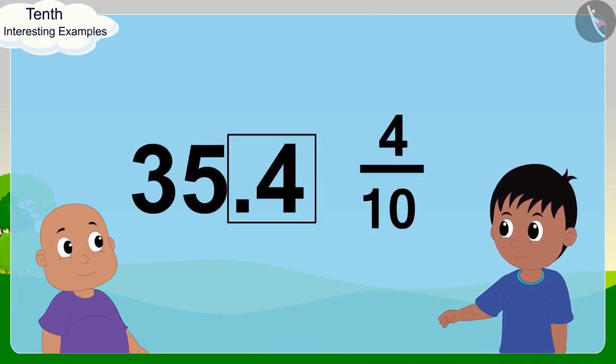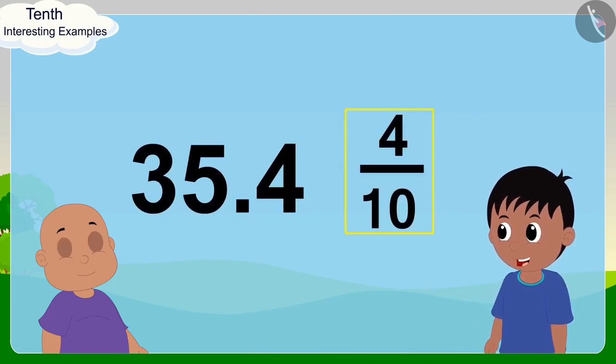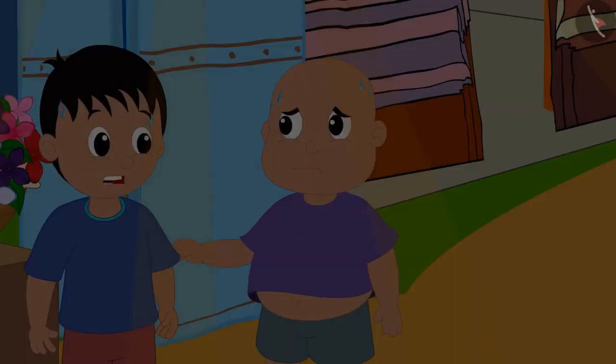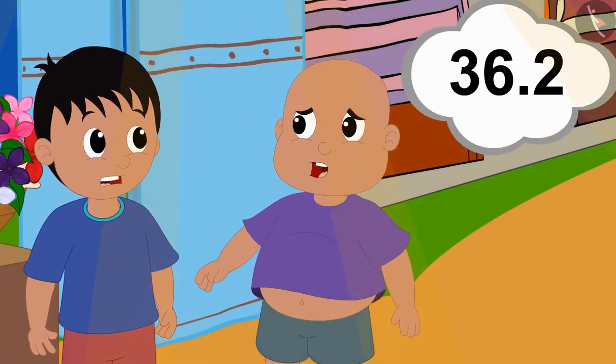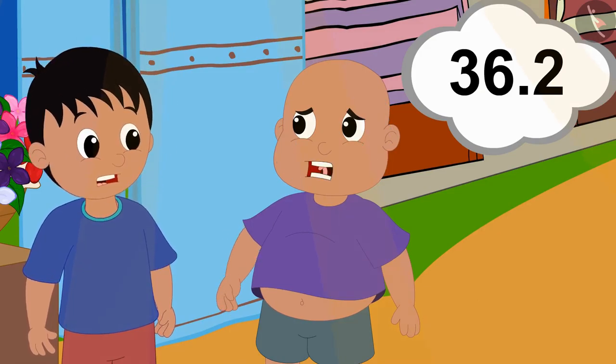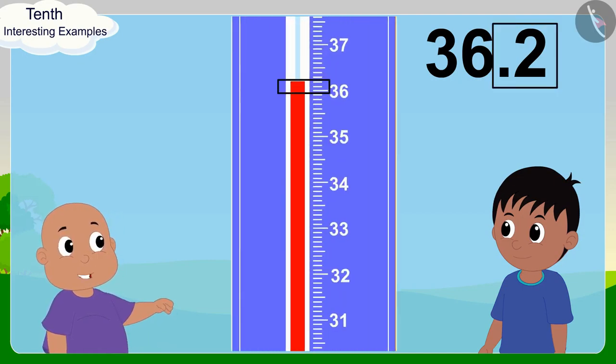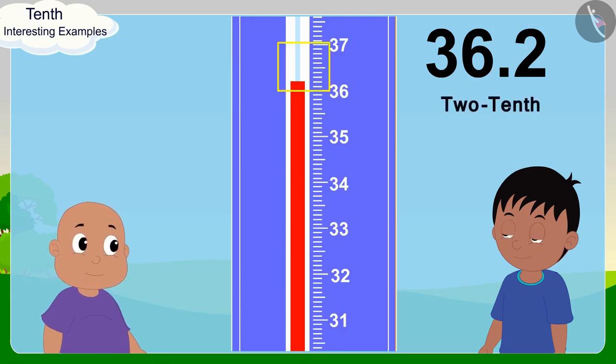'Well, if tomorrow's temperature is 36.2 degrees Celsius, then we can say that 0.2 degrees Celsius is two-tenths of a degree Celsius, or two by ten of a degree Celsius,' Bablu said excitedly.